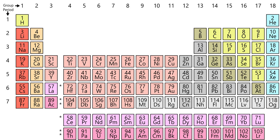Still other chemists further exclude the group 3 elements from the definition of a transition metal, on the basis that the group 3 elements do not form any ions having a partially occupied D-shell and do not therefore exhibit any properties characteristic of transition metal chemistry, making only groups 4–11 transition metals. Though the group 3 elements show few of the characteristic chemical properties of the transition metals, they do show some of their characteristic physical properties, on account of the presence in each atom of a single D-electron.